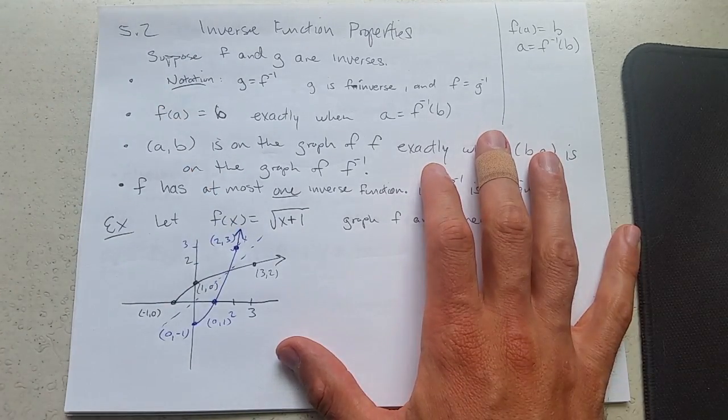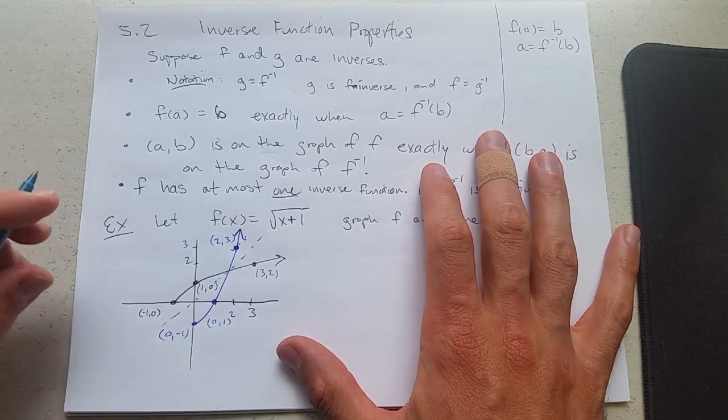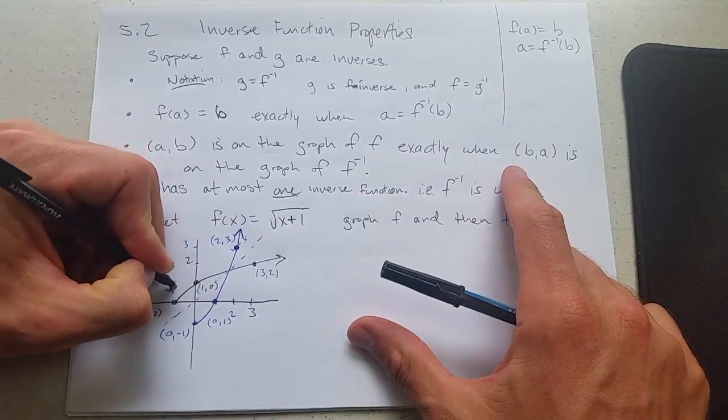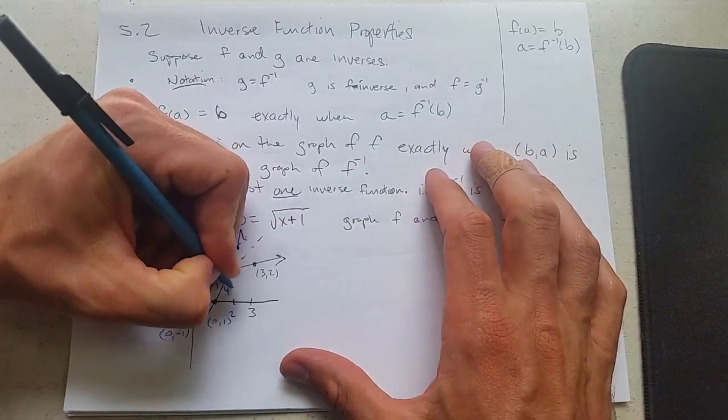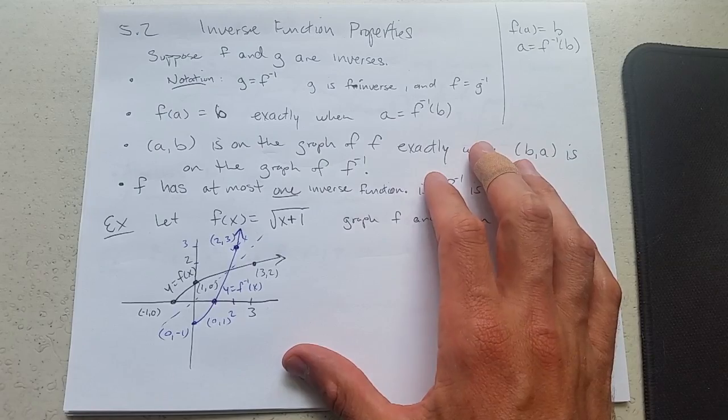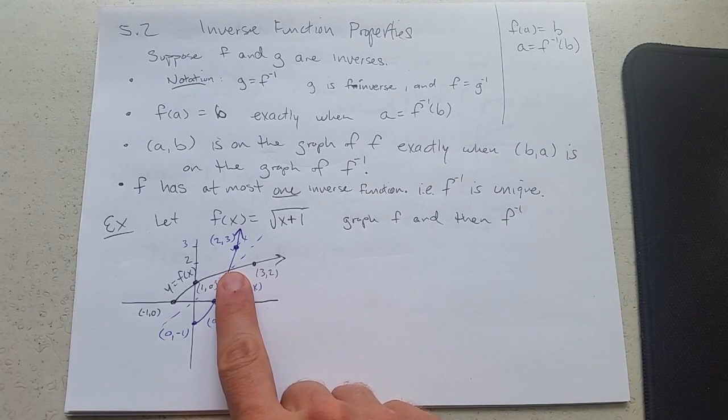So this blue function is the inverse graph to the black function. So if I label it, the black one, y equals f of x. The blue one, y equals f inverse x. Now all I did was find the inverse, the graph of the inverse. I didn't actually find the inverse yet.